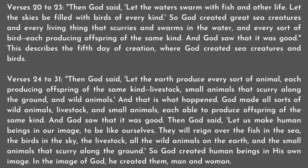Verses 24 to 31: Then God said, Let the earth produce every sort of animal, each producing offspring of the same kind, livestock, small animals that scurry along the ground, and wild animals. And that is what happened. God made all sorts of wild animals, livestock, and small animals, each able to produce offspring of the same kind. And God saw that it was good.